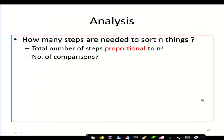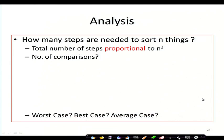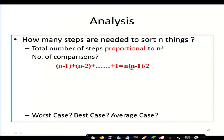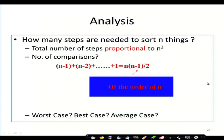The total number of comparisons is n times (n minus 1) divided by 2 — that is, (n minus 1) plus (n minus 2) plus ... plus 1, which equals n(n−1)/2. This is of the order of n squared, since expanding gives n squared minus n divided by 2. We write this as O(n²).